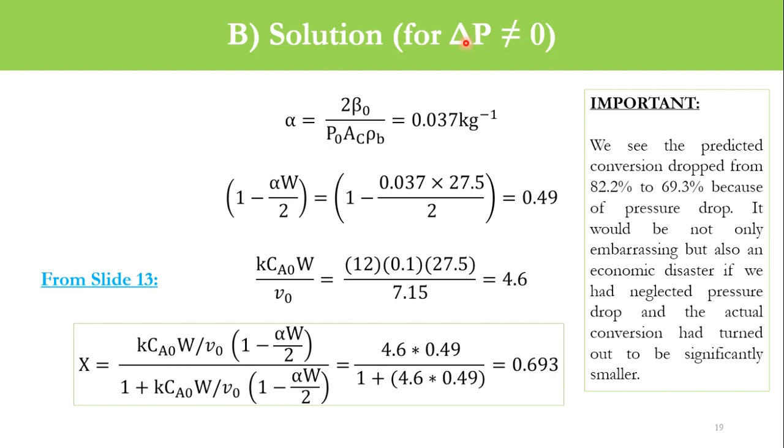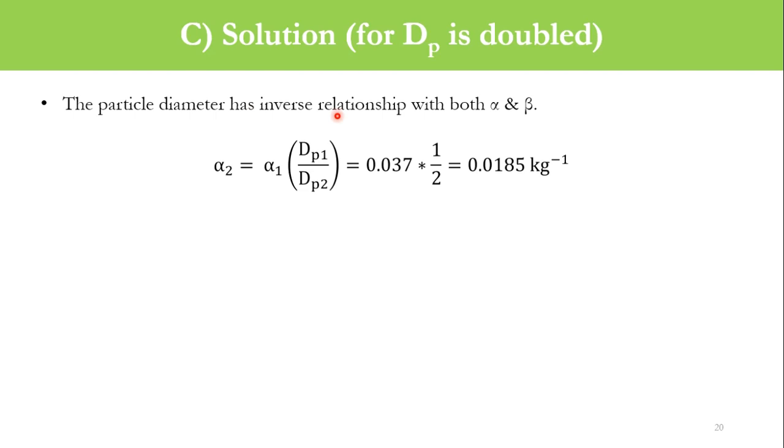Once we are designing a reactor, the particle diameter has inverse relationship with both alpha and beta. For part C, once we say we are doubling the value of D, alpha2 equals alpha1 times Dp1/Dp2. Alpha1 is 0.037. Because we're doubling, it's 1/2. Accordingly we get alpha2 equals 0.0185 per kg.